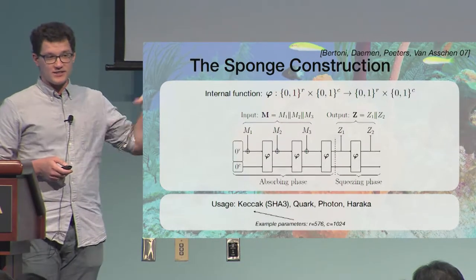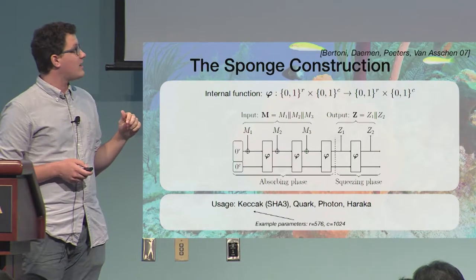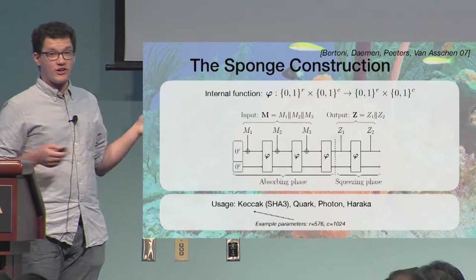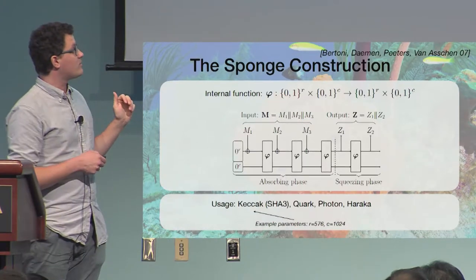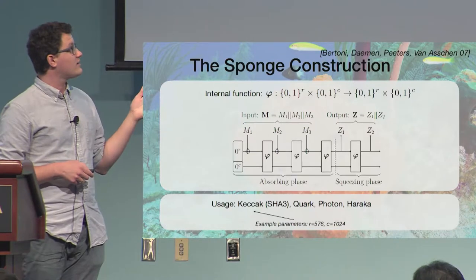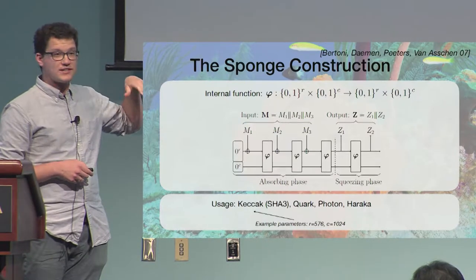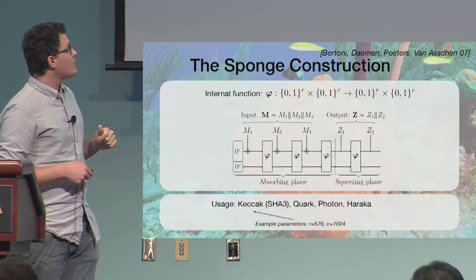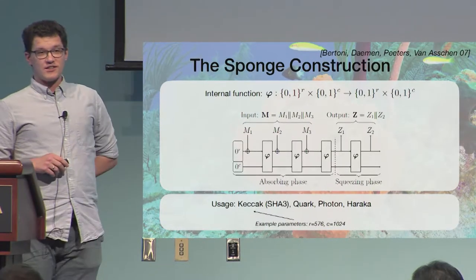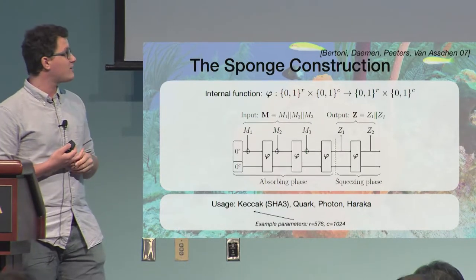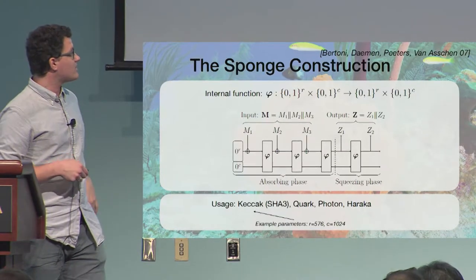And then to get this water out, we squeeze it. And this is what happens in the squeezing phase. We output the first R bits of the state. And in this construction, we can actually ask for longer outputs. So we can output more and more blocks of the output Z by applying phi again and again.